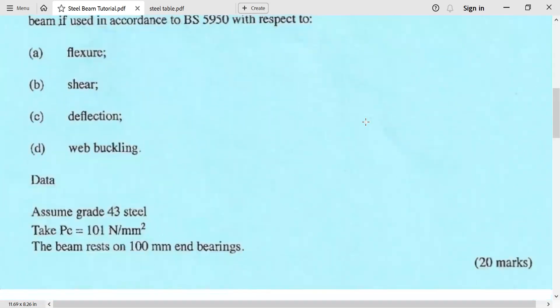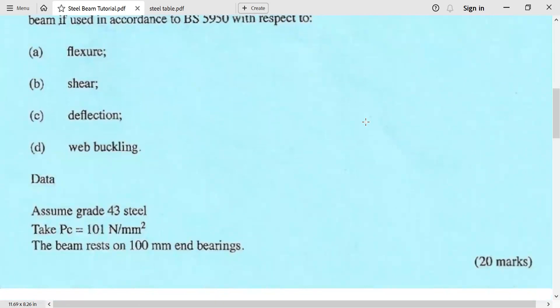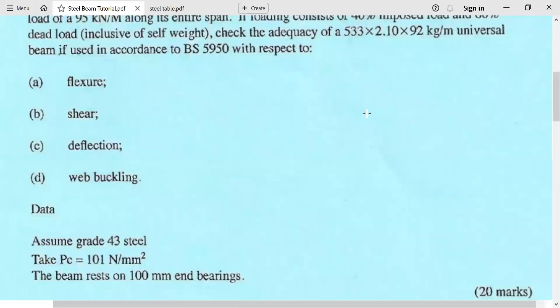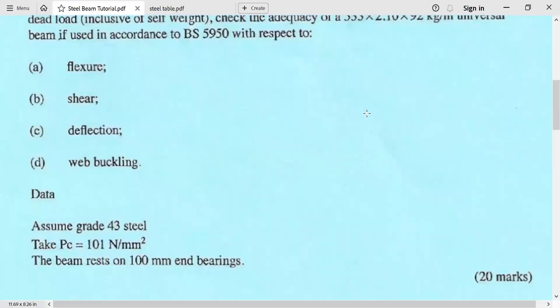This is the data given. We have been told to assume grade 43 steel. This has a py of 275 newton per millimeter squared. We have to take pc is equivalent to 101 newton per millimeter squared and we assume the beam rests on 100 millimeter end bearing.